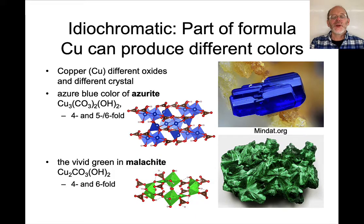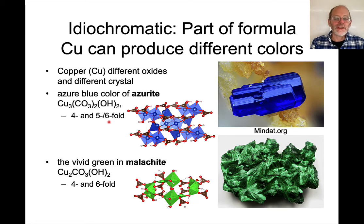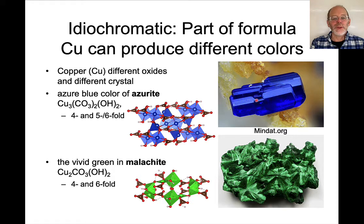Here are some examples of idiochromatic colors. Copper, another transition metal, can cause different colors. Copper in azurite occurs in two coordinations: there's a four-fold coordination — these little plates — and either five- or six-fold, depending on how you choose to express the structure, which are the darker polyhedra. This gives rise to the blue color.